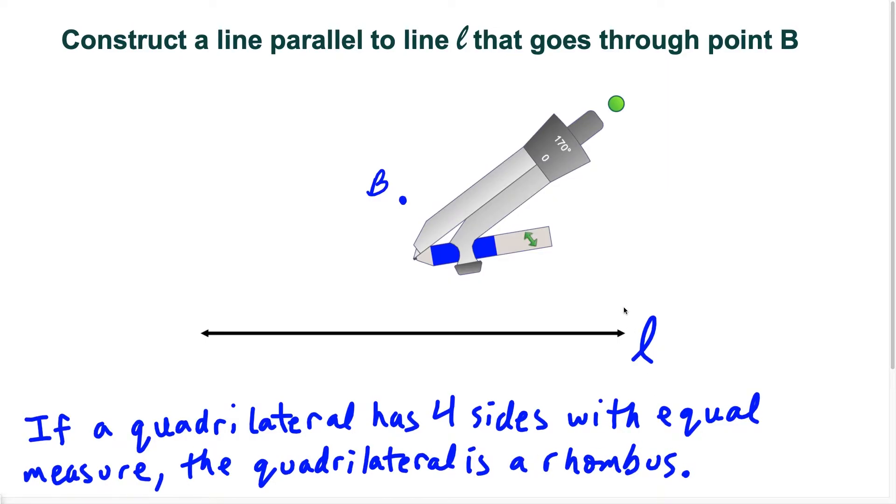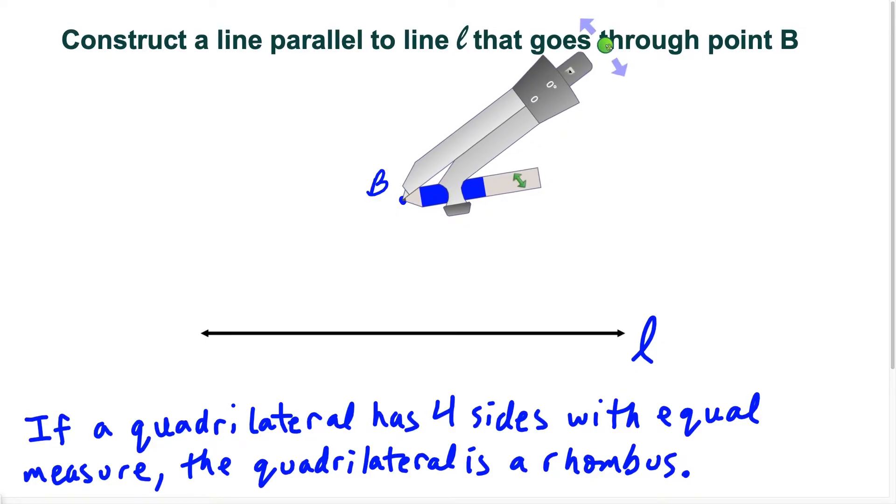Our goal is going to be to construct a quadrilateral with four equal sides. And that's going to be enough to establish that we have a rhombus. And once we know we have a rhombus, a rhombus is a parallelogram,